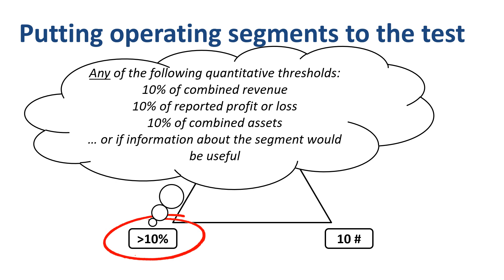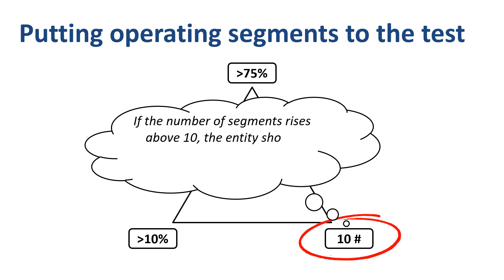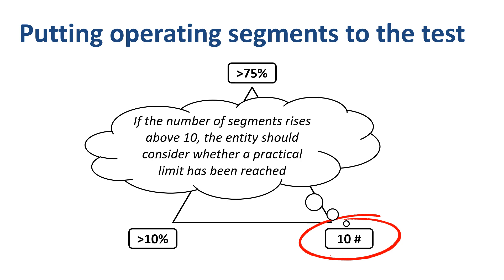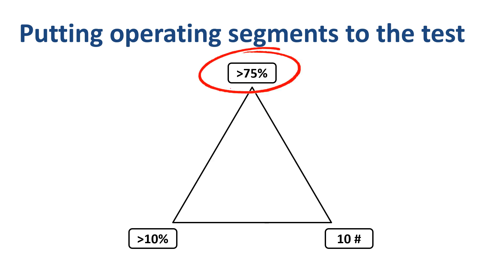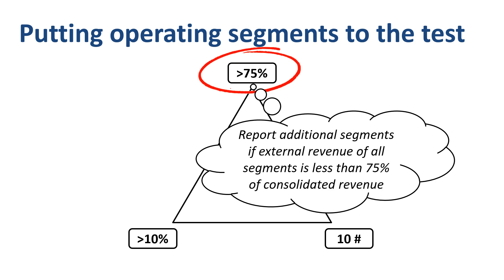Alternatively, two or more operating segments may be aggregated into one reportable segment if they have similar economic characteristics, as in the range of the entity's business activities and the economic environments in which it operates. If the number of segments rises above 10, the entity should consider whether a practical limit has been reached. This is logically connected to the previous test, as 10 segments that each meet a 10% test will get you to around 100% of the business results. A real hard limit test is the 75% test: a company needs to report additional segments if external revenue of all reported segments is less than 75% of consolidated revenue. Adding additional segments decreases the 'all other segments' category and needs to get the sum of reported segments' revenue above 75%.